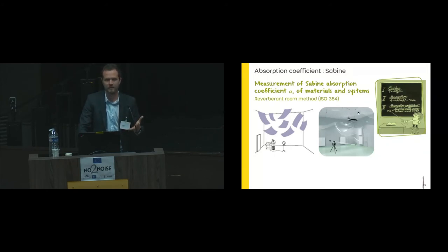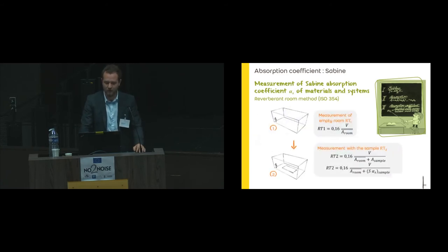Used in ISO 354 that does the calculation of the alpha Sabine. For that you use a reverberant room. You assume that it's a diffuse field—a huge hypothesis. Then you do the measurement in the empty room, measure the reverberation time, and you're able to calculate the equivalent absorption area. Then you do the same measurement of reverberation time with a sample of 10 square meters. Knowing the second reverberation time, you're able to calculate the alpha s knowing the surface of your sample. It's really classic.